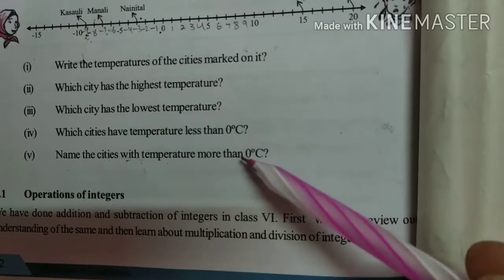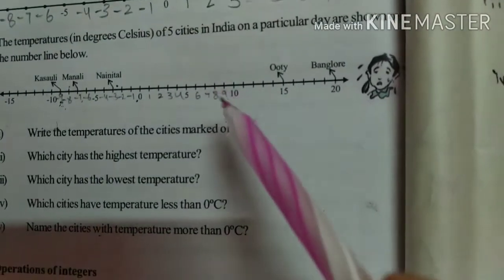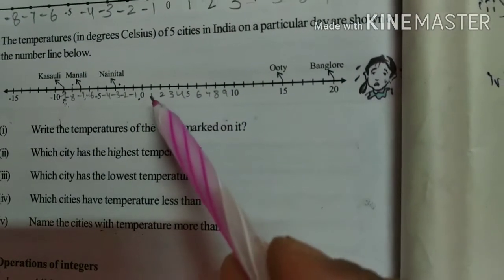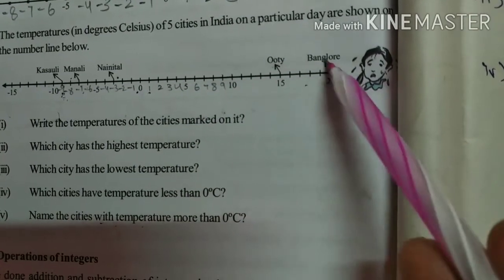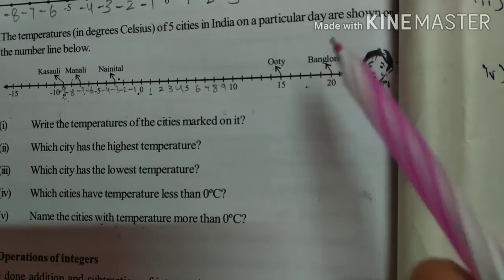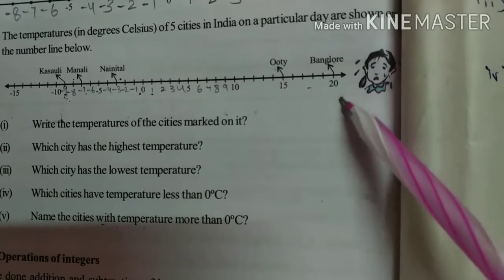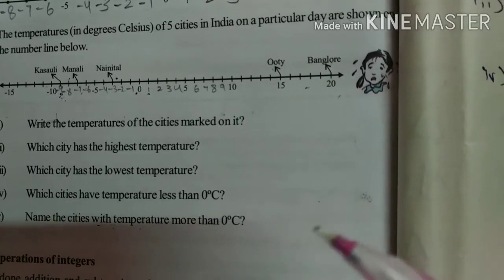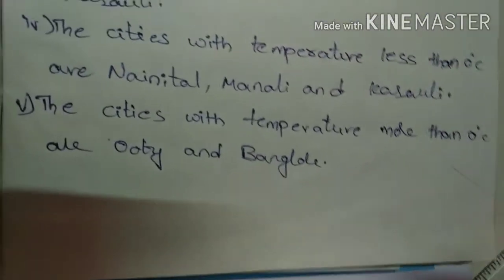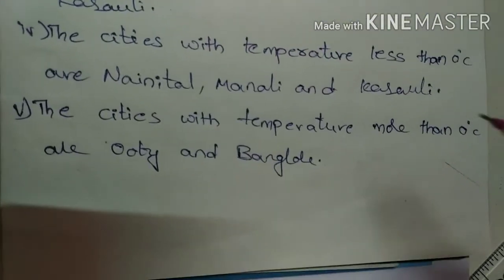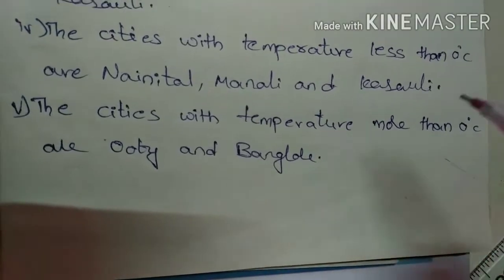Name the cities with temperature more than 0 degrees. So more than 0 degrees — how many cities are there? Only two cities: Ooty and Bangalore. Ooty 15 degrees, Bangalore 20 degrees centigrade. More than 0 degrees: Ooty and Bangalore.